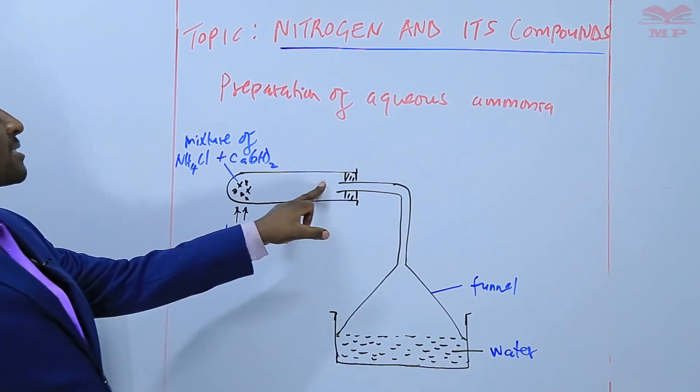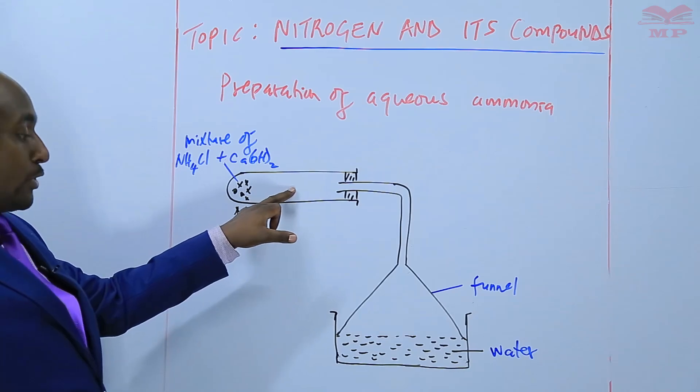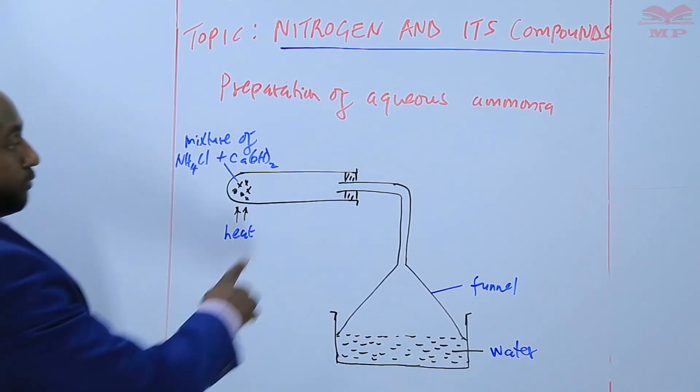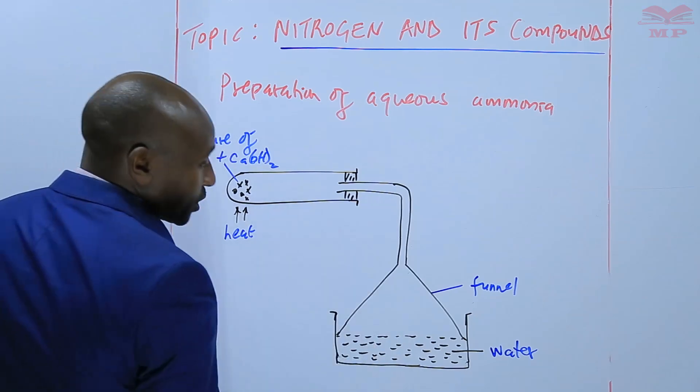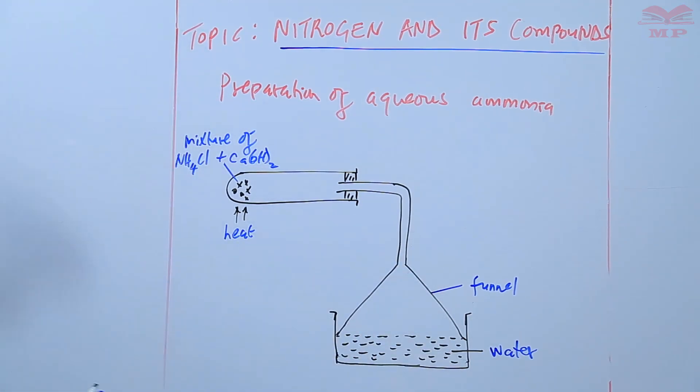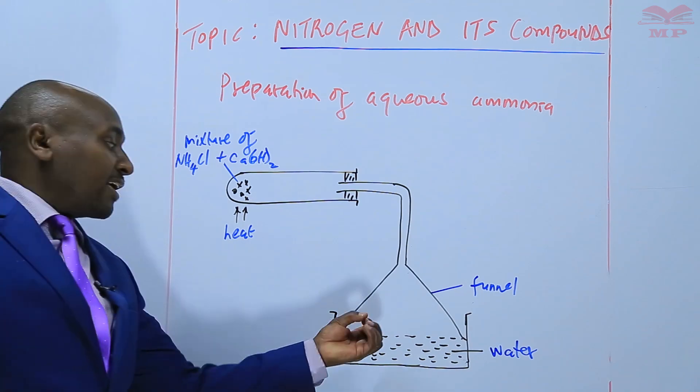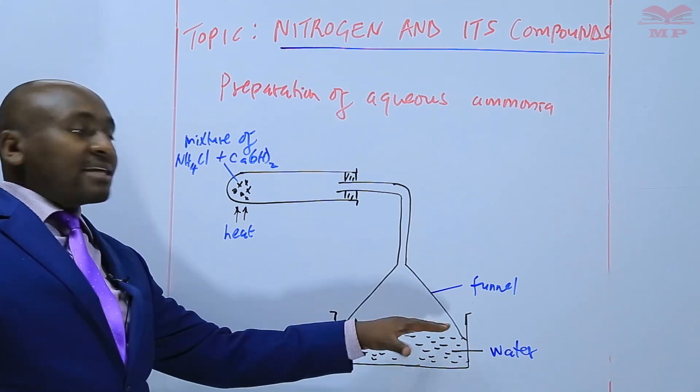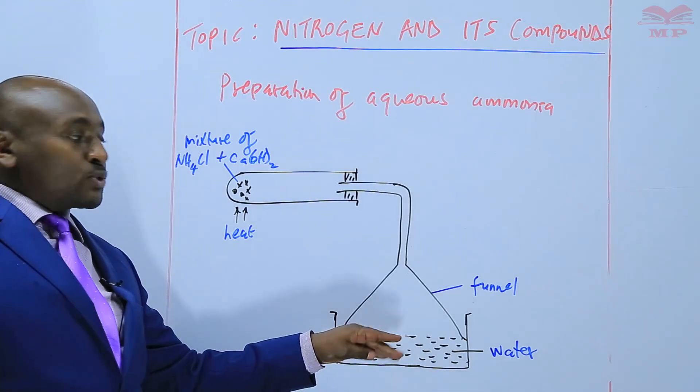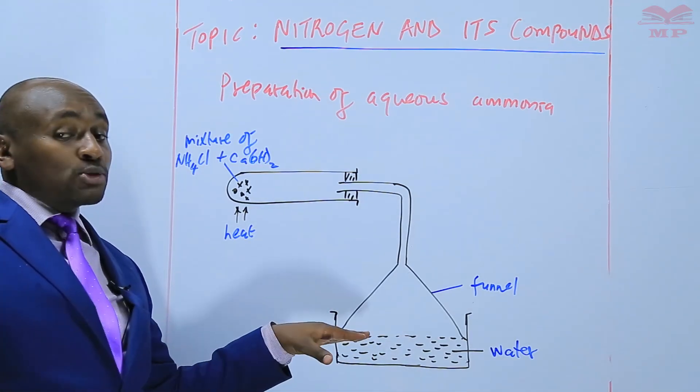And the gas is produced at this point. So to prepare aqueous ammonia, we dissolve ammonia gas in water via the funnel or through the funnel. And this funnel provides a large surface area for the gas to dissolve in water. So remember, the gas is highly soluble in water.